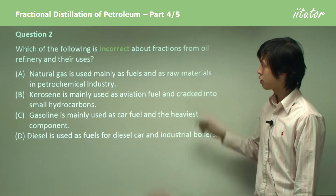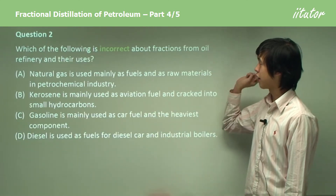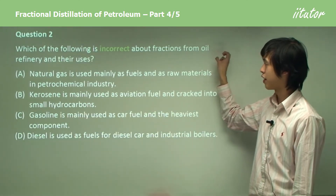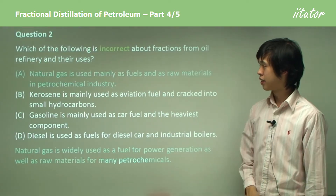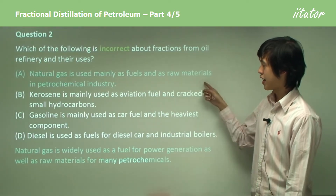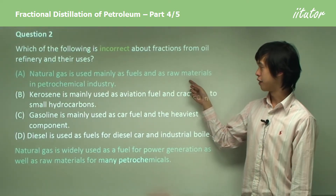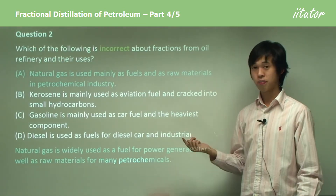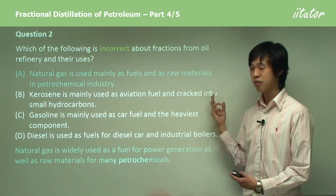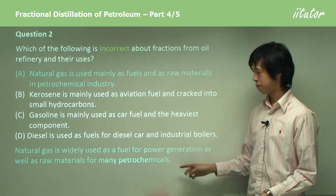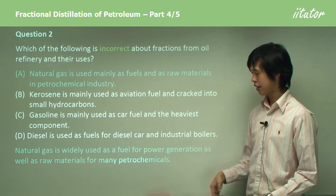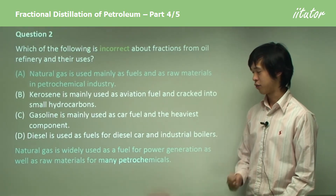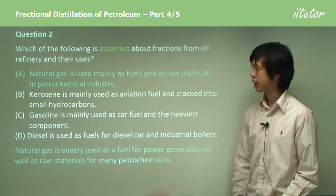Question 2: which of the following is incorrect about the fractions from oil refinery and their uses? Option A: natural gas is used mainly as a fuel and as raw materials in the petrochemical industry. That's true, so it's not the answer. It's widely used for power generation as well as raw materials for petrochemicals.